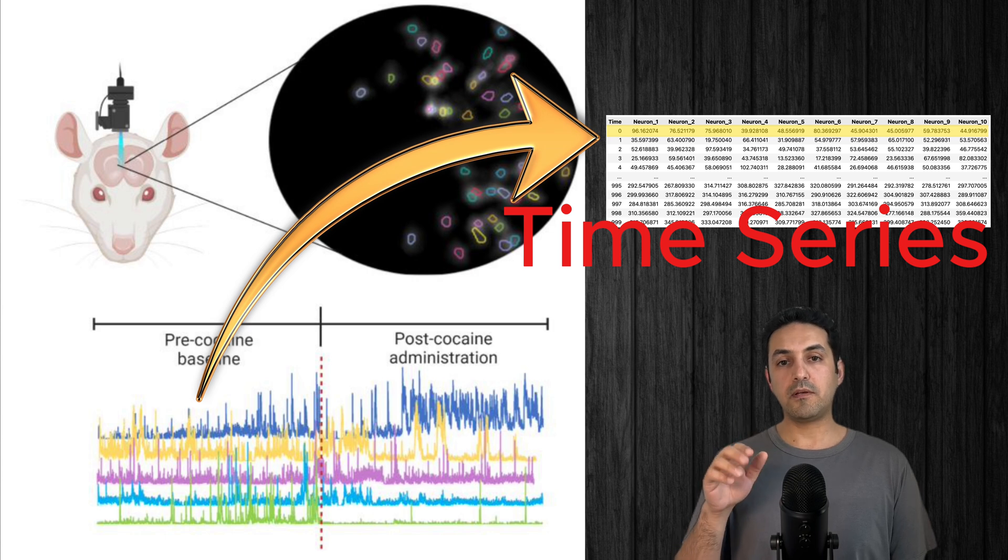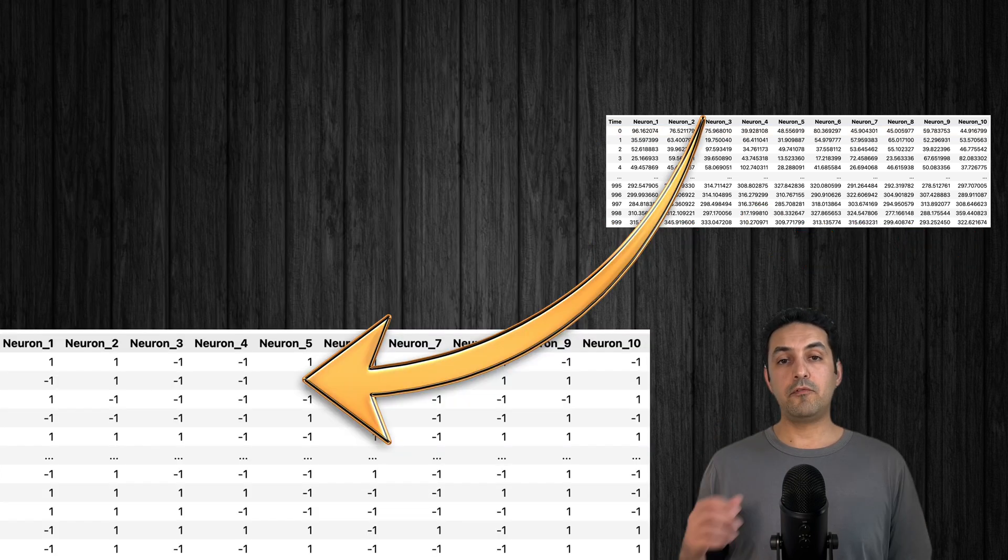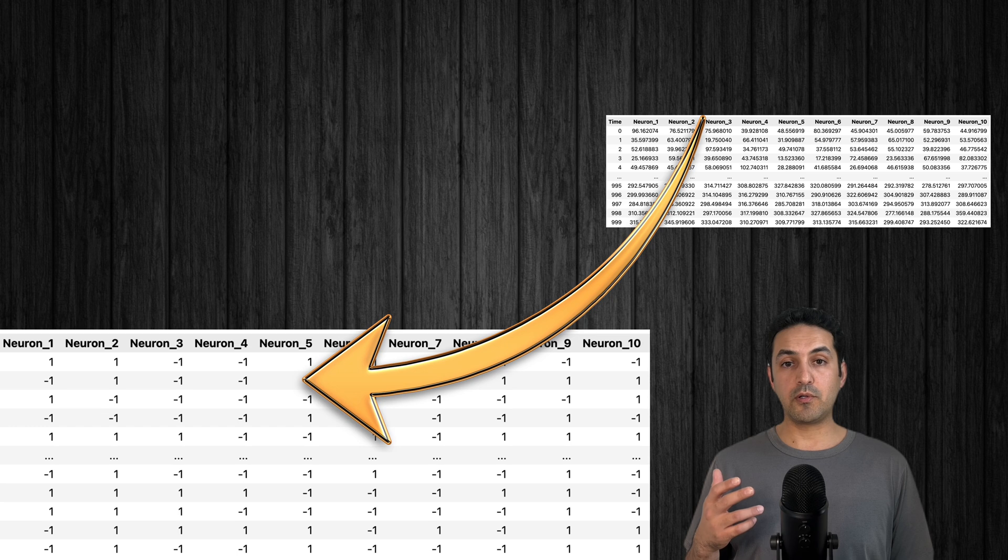Just to know, this type of data is called time series. For the stability analysis that I'm going to discuss in this video, each cell of the spreadsheet turned into a binary minus one or one form.